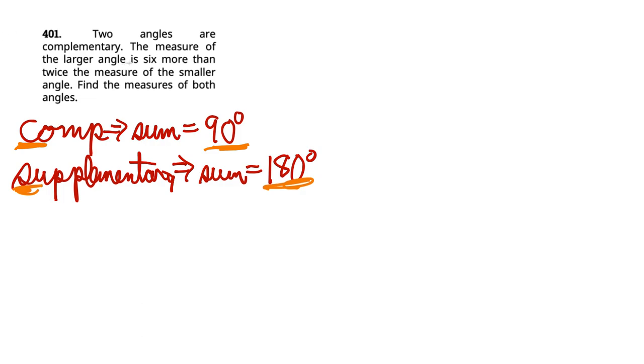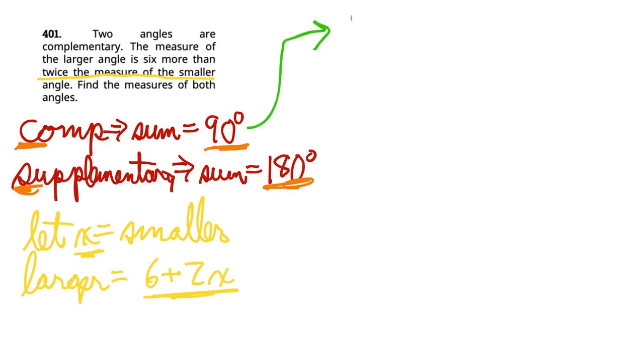The measure of the larger angle is six more than twice the measure of the smaller. Let's let X equal smaller, because I like to key things off the smaller angle. So larger will be six more than, so six plus twice the measure of the smaller, so twice X. So we've got X as a smaller and the larger is six plus 2X. Now when we combine these into that sum equals 90, so we can write X plus six plus 2X, the sum is 90.